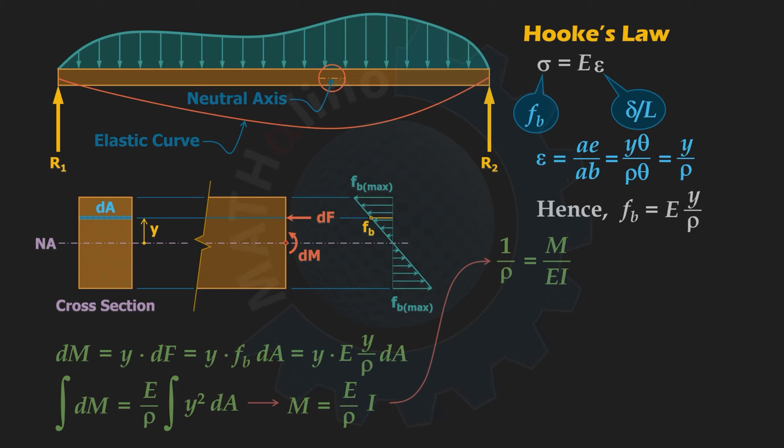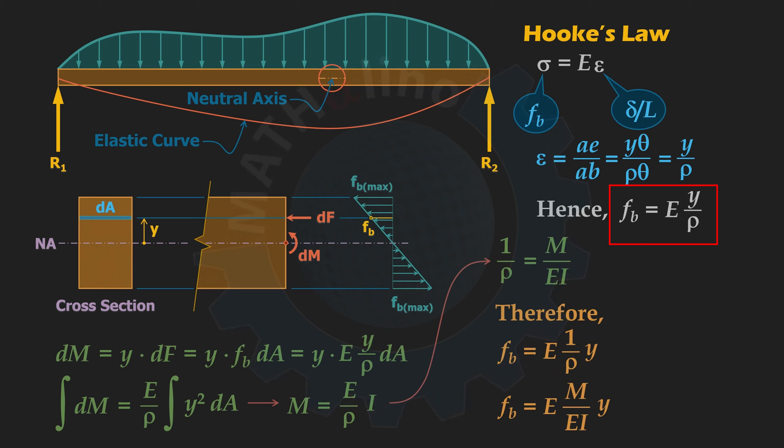This equation of fb can be rearranged for our purpose. Substitute M over EI for one over rho, cancel out E, and we have the formula for bending stress at distance y from NA: fb is equal to My over I.